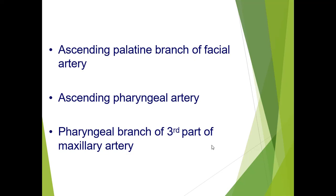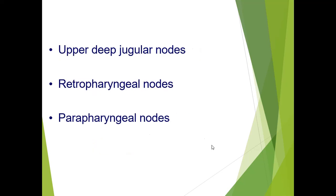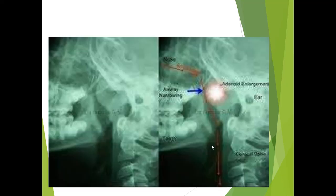The blood supply of the adenoid comes from the ascending palatine branch of the facial artery, the ascending pharyngeal artery, and the pharyngeal branch of the third part of the maxillary artery. The lymphatic drainage flows into the upper deep jugular nodes, the retropharyngeal nodes, and the parapharyngeal nodes.